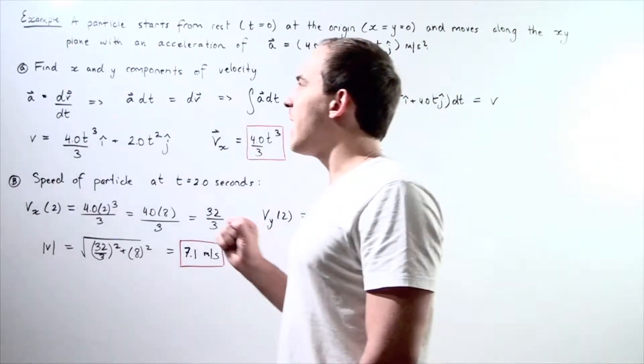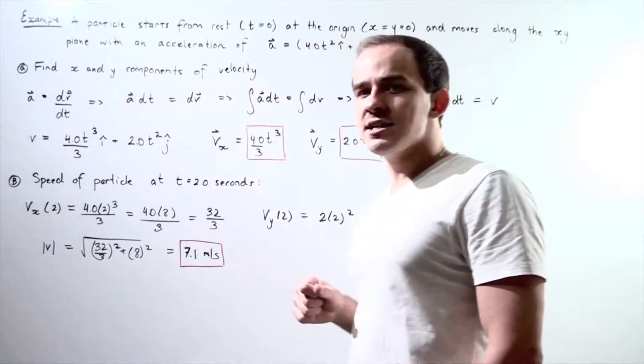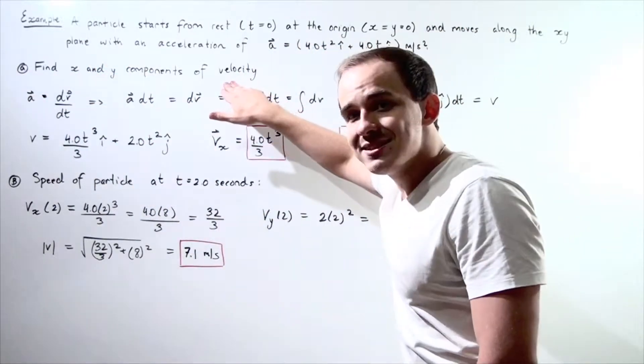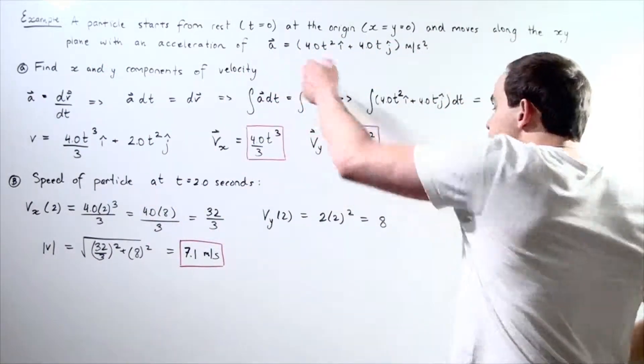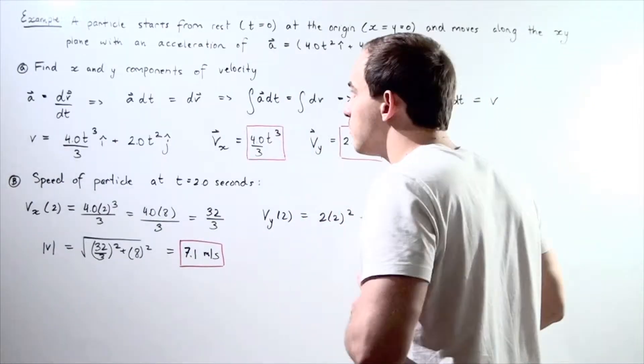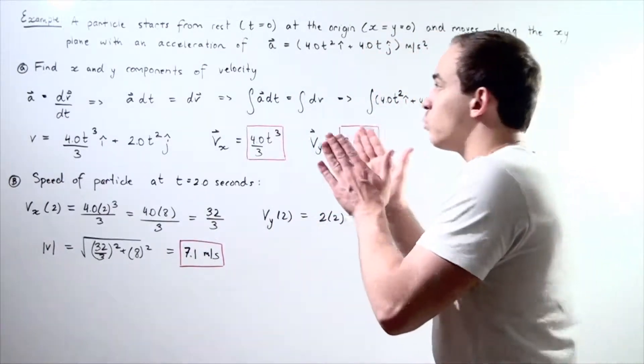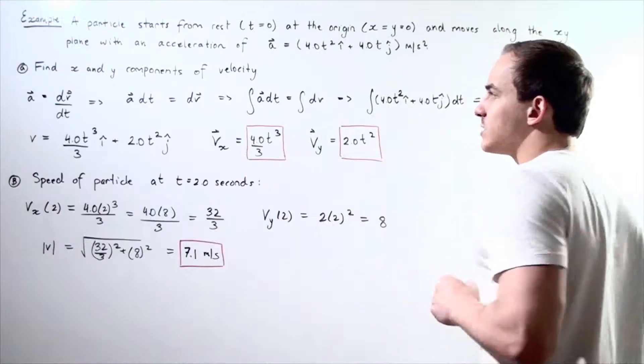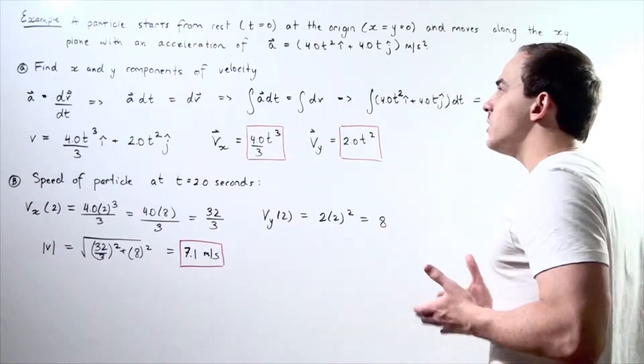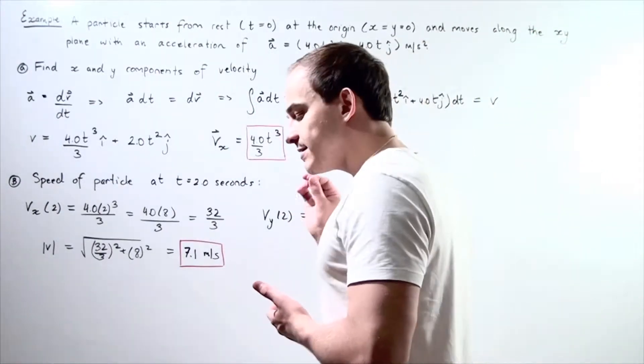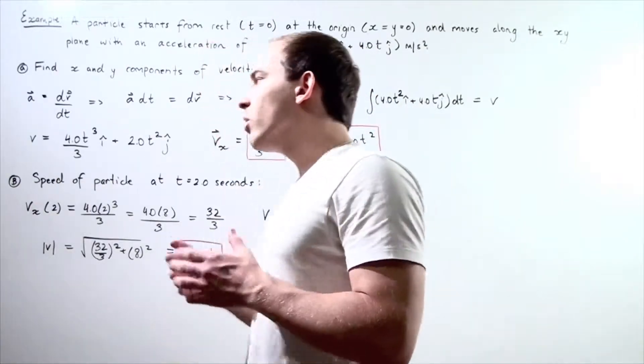So we want to find the x and y components of velocity. Notice this equation gives us the x and y components of acceleration, but what we need to find are the x and y components of velocity. So how do we go about finding these x and y components?